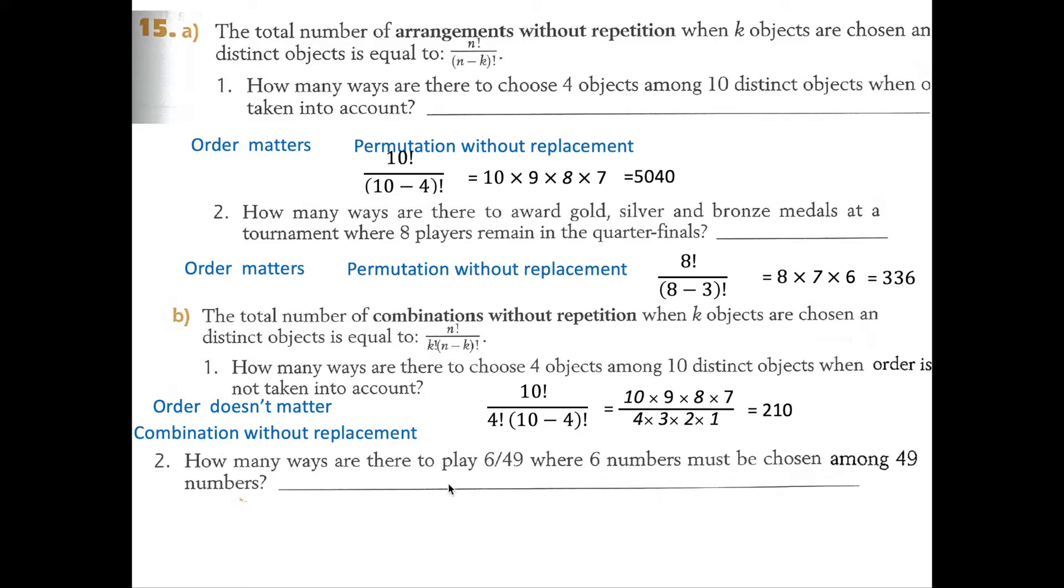If the winning numbers were 1, 2, 3, 4, 5, 6, and you happen to have 6, 5, 4, 3, 2, 1, or any other order of those numbers, you win.